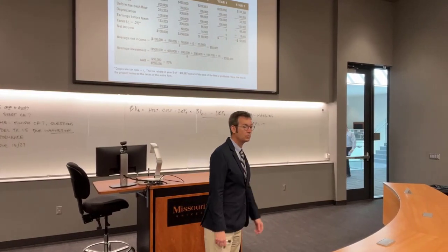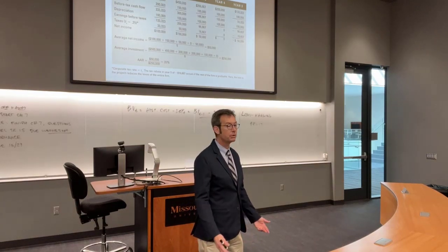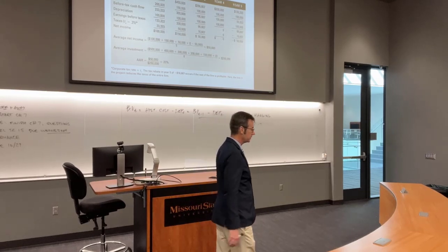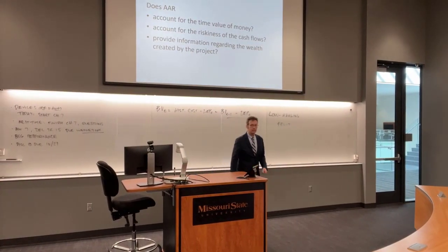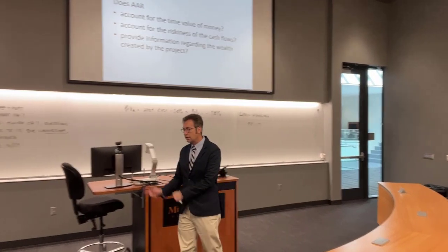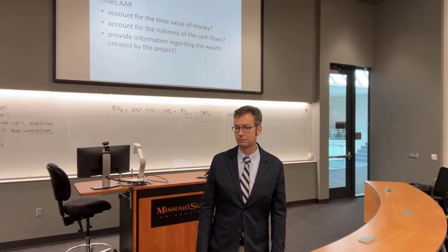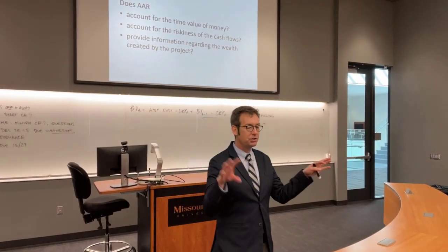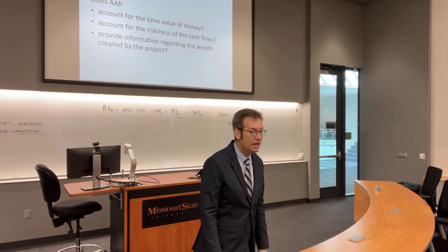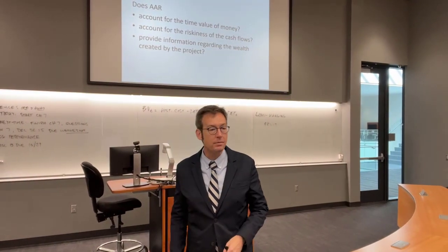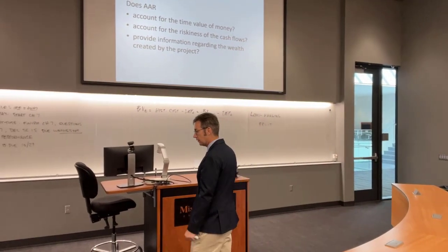Let's do the three questions for AAR. Does it account for the time value of money? No way — they just throw all those numbers into the same hopper and divide by five or six, with no discrimination between cash flows at time one versus time five. Does it account for the riskiness of the cash flows? Absolutely not. Occasionally an accountant will say we use a higher arbitrary cutoff for riskier projects, but there's no scientific technique behind arriving at that number the way there is with the capital asset pricing model.